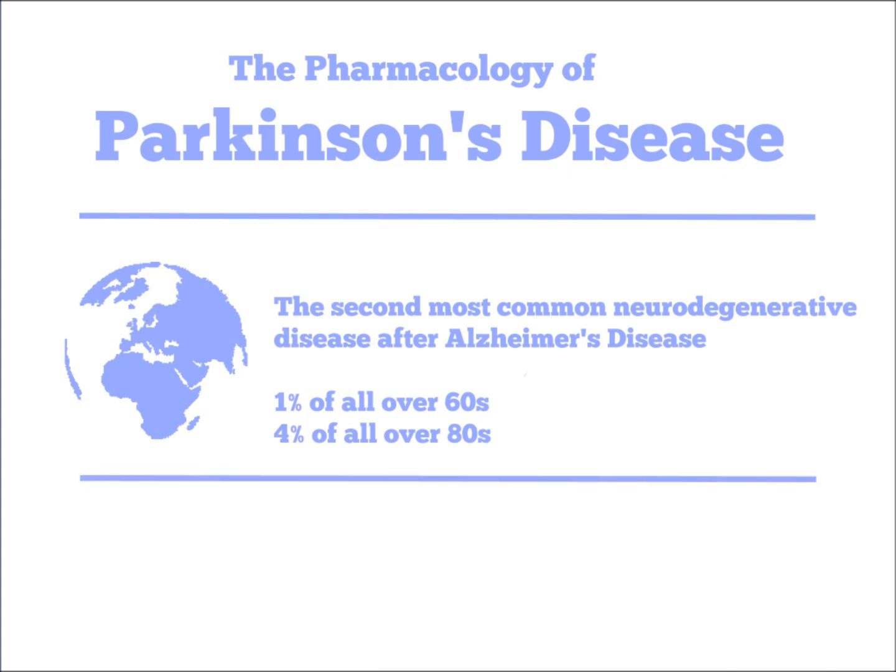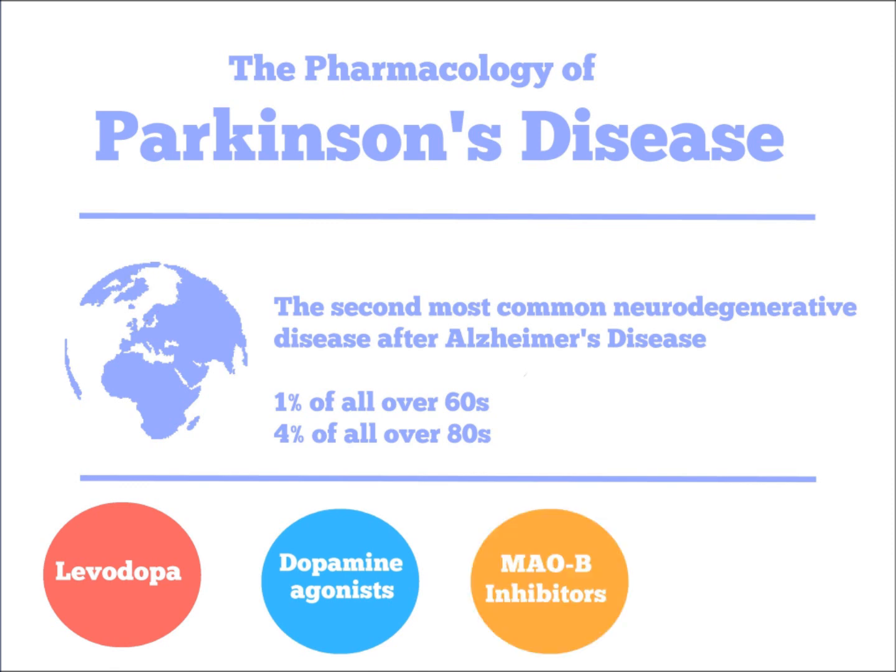When examining the pharmacological treatment of Parkinson's disease, there are four main drugs and drug classes we will be concerned with: Levodopa, dopamine agonists, monoamine oxidase B inhibitors (also known as MAOB inhibitors), and catechol-O-methyltransferase or COMT inhibitors.